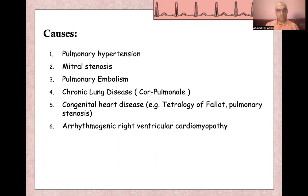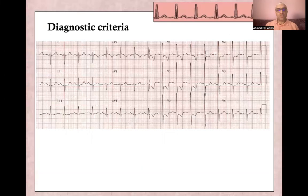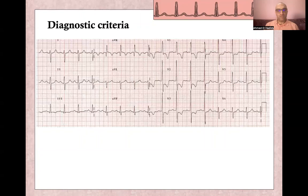And arrhythmogenic right ventricular cardiomyopathy. The diagnostic criteria for right ventricular hypertrophy is different from left ventricular hypertrophy — no voltage criteria and non-voltage criteria — because of the normally thinner right ventricular wall and low pressure.